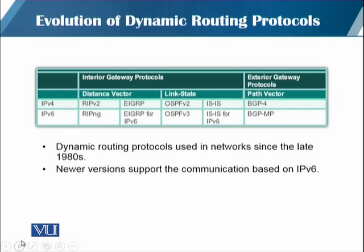IPv4 کے اندر، اور IPv6 میں بھی، دو قسم کی dynamic routing protocols ہیں: ہمارے پاس interior gateway protocols ہیں اور exterior gateway routing protocols ہیں۔ Interior میں distance vector routing protocols ہیں اور link state routing protocols ہیں، اور exterior میں ہمارے پاس BGP ہے۔ IPv4 کے لیے distance vector اور link state کے الگ versions ہیں۔